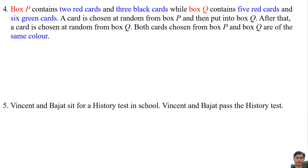Number 4. Box B contains 2 red cards and 3 black cards, while Box Q contains 5 red cards and 6 green cards. A card is chosen at random from Box B and then put into Box Q. After that, a card is chosen at random from Box Q. Both cards chosen from Box B and Box Q are of the same color. They are dependent events.